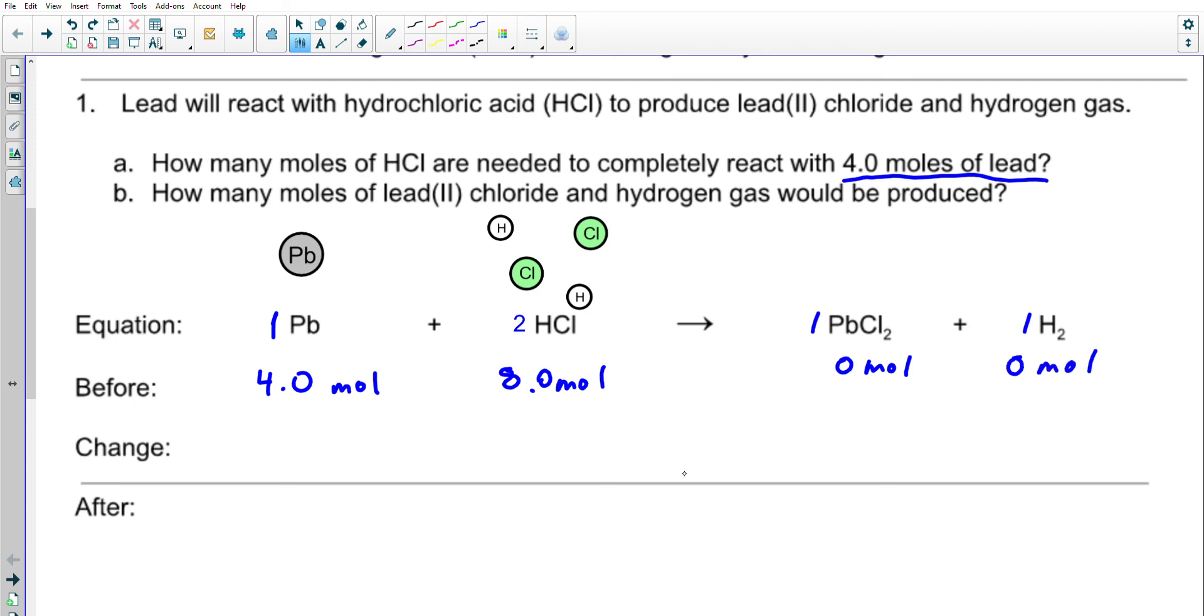Now the change that's going to occur is the four moles of lead are going to come together with 8 moles of HCl and make the product. The change here is I'm going to lose 4 moles of elemental lead, I'm going to lose 8 moles of HCl, and I'm going to produce, relative to these, one mole of PbCl2 and one mole of H2.